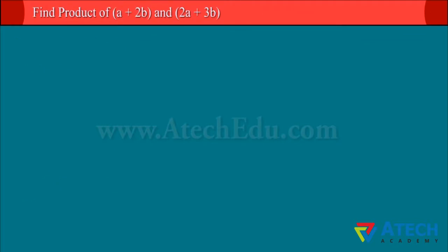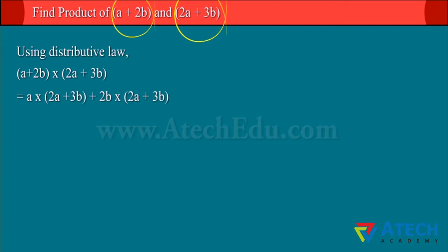For multiplying a binomial by a binomial, every term in one binomial multiplies every term in the other binomial. Using distributive law of multiplication, we carry out term by term multiplication. Note that we have 2 terms in each binomial.